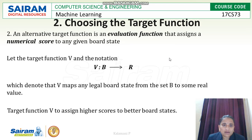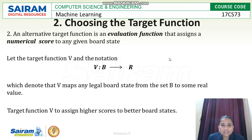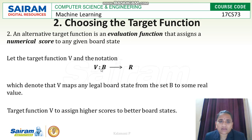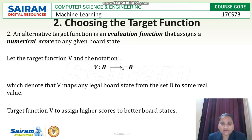An alternative target function uses an evaluation function that assigns a numerical score to any given board state. The target function V is defined such that V maps a board state B to a real value R — for every state, a numerical value is assigned. That set of numerical values is R.